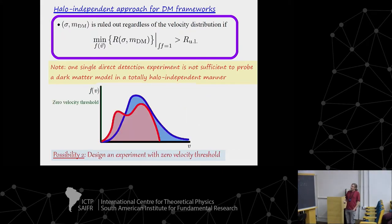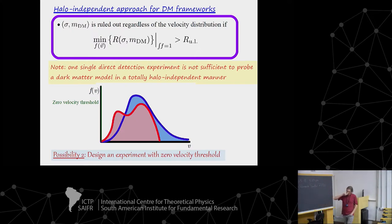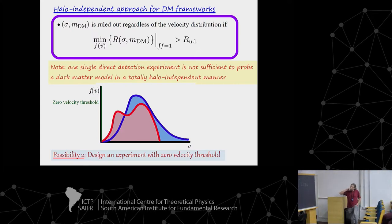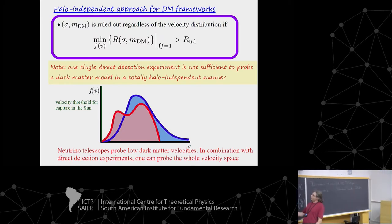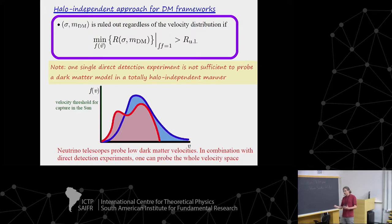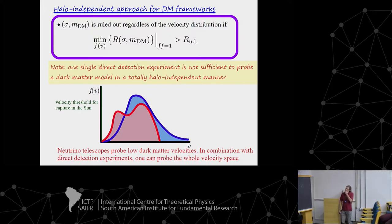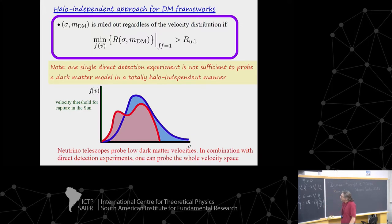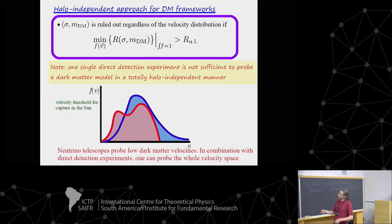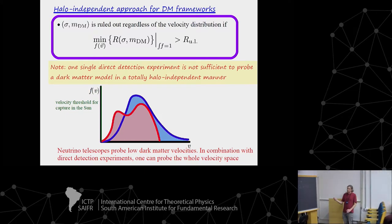The second possibility is to combine a direct detection experiment with a detector that has a zero velocity threshold. While this is impossible for a terrestrial experiment, nature provides such a detector: the sun. The slower a dark matter particle is moving, the more likely it gets trapped in the sun after scattering. So neutrino telescopes sensitive to dark matter capture in the sun are mostly sensitive to the low-velocity part of the distribution, while direct detection experiments are sensitive to the high-velocity part. Their combination can probe the full velocity space.